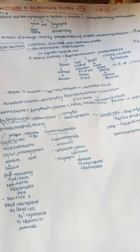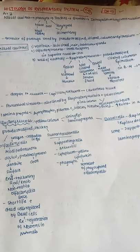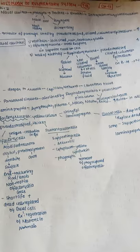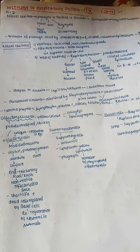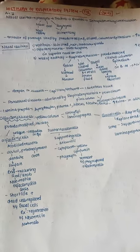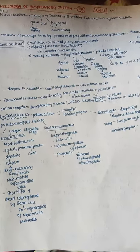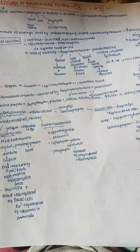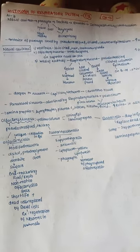Today let us start the histology of the respiratory system. First, air passes through the nasal cavities, then into the pharynx, then into the trachea, bronchi, and next into the intrapulmonary continuation.